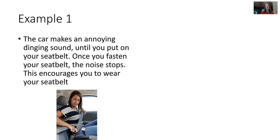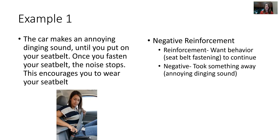Here's an example: when you get in the car, it makes that annoying bing bing bing sound until you put on your seat belt. Once you fasten your seat belt, the noise stops, and this encourages you to wear your seat belt. The answer is it's negative reinforcement. It's reinforcement because they want you to put on your seat belt — to reinforce and encourage that behavior. And it's negative because it's taking something away: that annoying dinging sound goes away once you do the desired behavior.